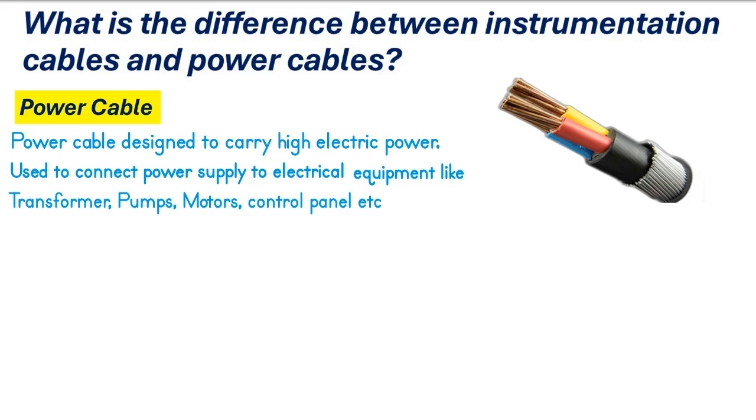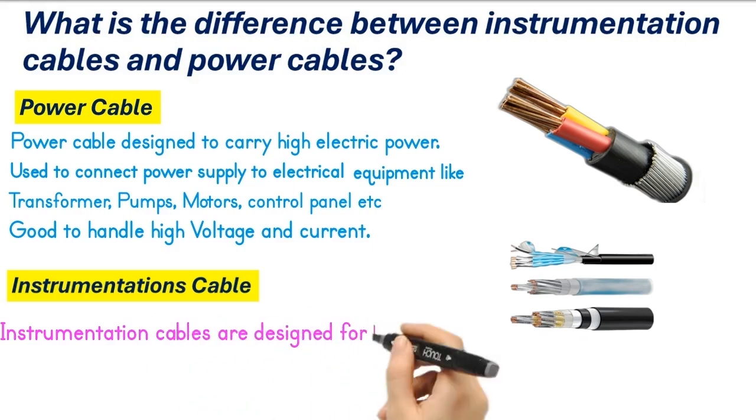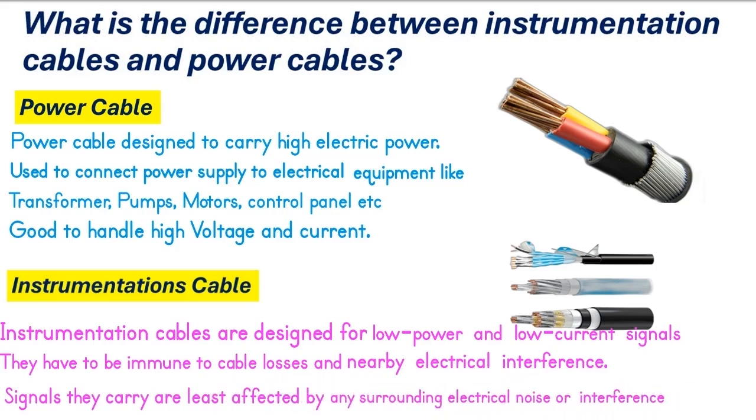While instrumentation cables are designed for low power and low current signals, they have to be immune to cable losses and nearby electrical interference. These cables are designed in such a way that the signals they carry are least affected by any surrounding electrical noise or interference.